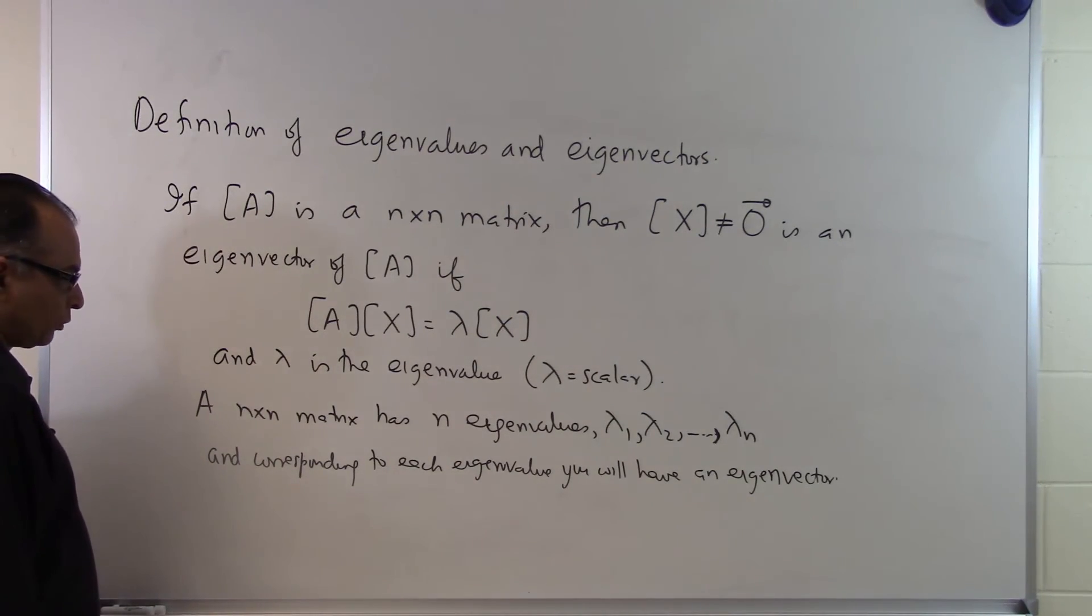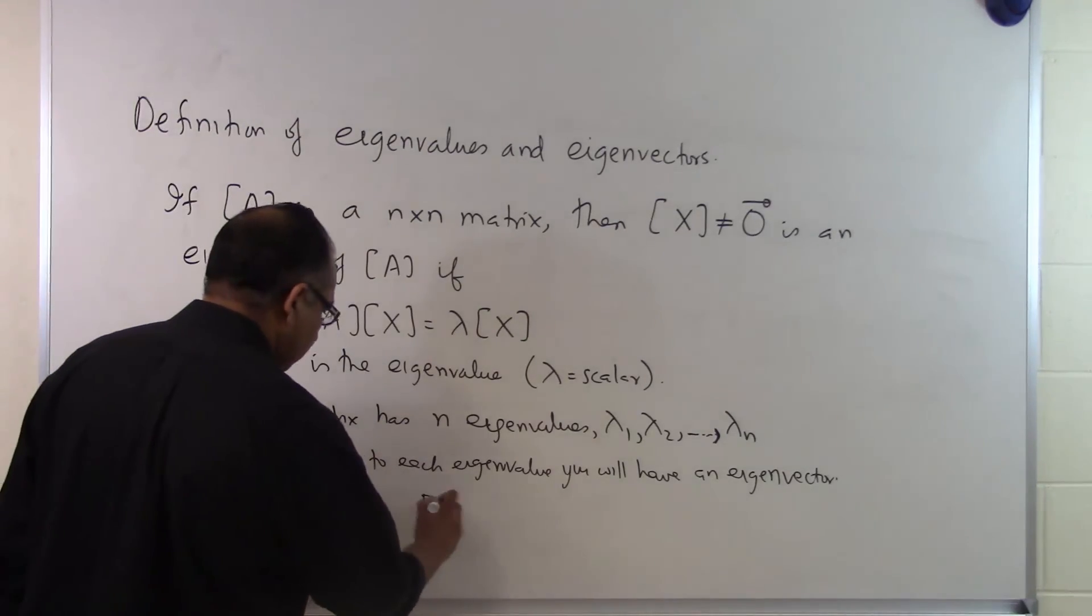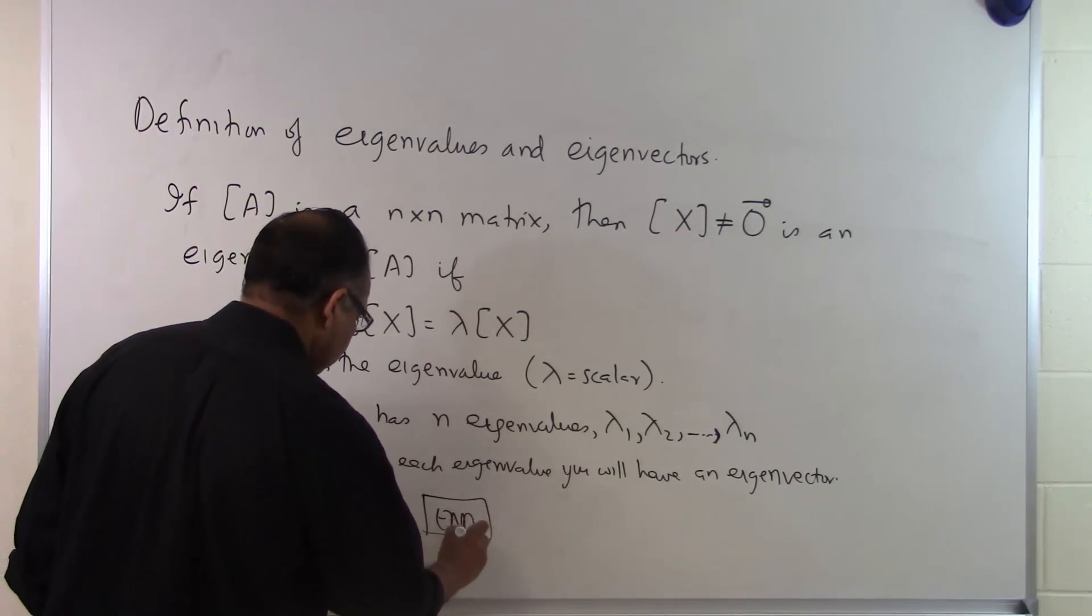So those are the things which we have to think about when we talk about what it means for a particular square matrix to have eigenvalues and eigenvectors. And that is the end of this segment.